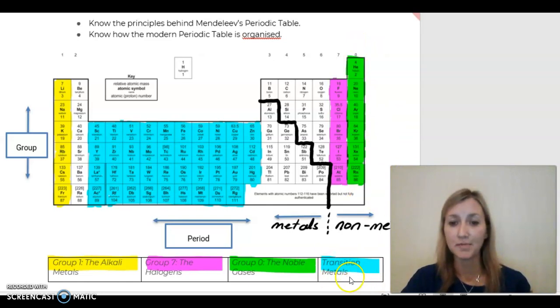And then finally, for the Transition Metals, I chose blue and shaded in this section of the table. You should have similar with your colours but it will show you very clearly where these important groups are found in the Periodic Table.